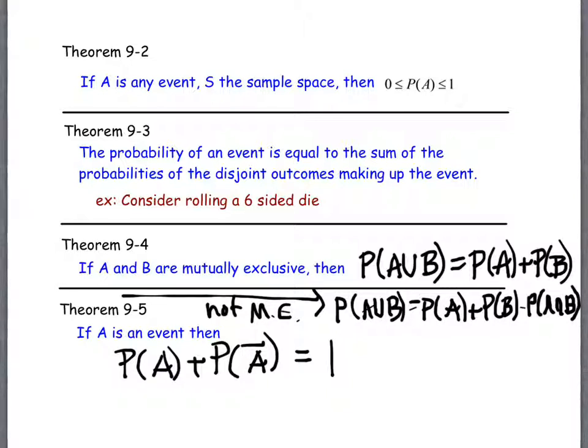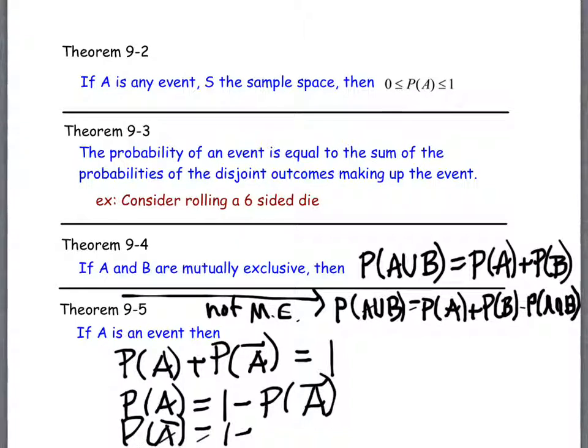So one way to sort of talk about it in a way that's a little bit more reasonable is to say that the probability that event A happens is 1 minus the probability that it doesn't. Or you could say the probability the event A complement happens is 1 minus the probability of A. So if the chances are that it's 30 percent chance it's going to rain today, what's the chance it's not? 70 percent. We use these facts all the time.